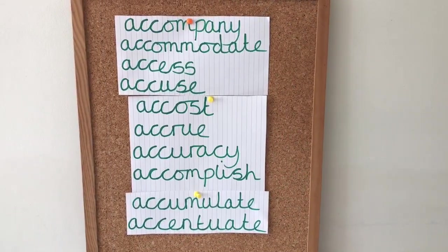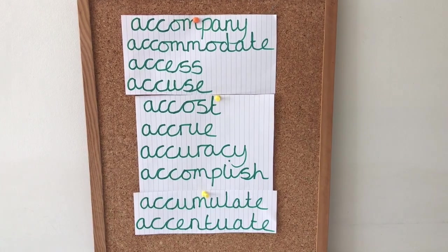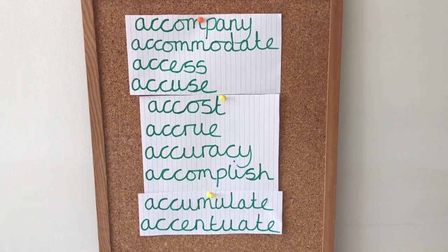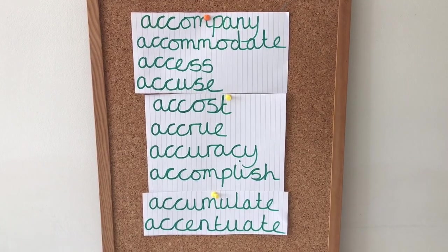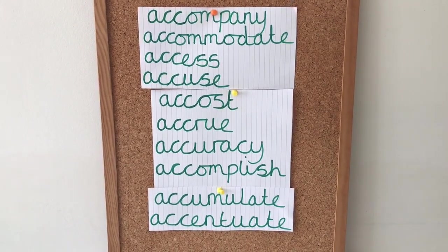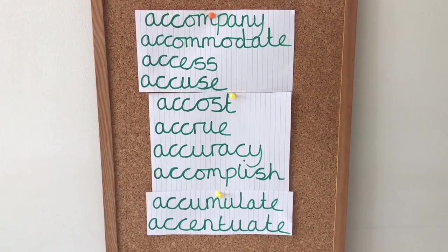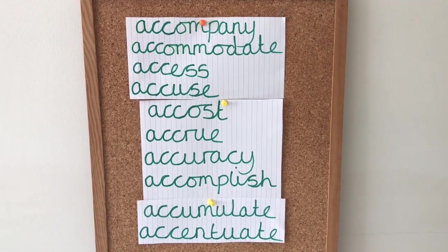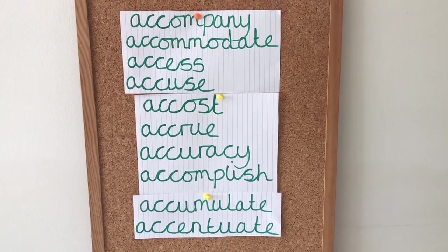Let's see how you got on. As you can see on the board, we now have the correct spelling of the words: accompany, accommodate, access, accuse, accost, accrue, accuracy, accomplish, accumulate, and accentuate. There may be some words on the board that you do not know the meaning of, but that is absolutely fine because one of your later tasks will be to use the dictionary to double check the meaning of each word.